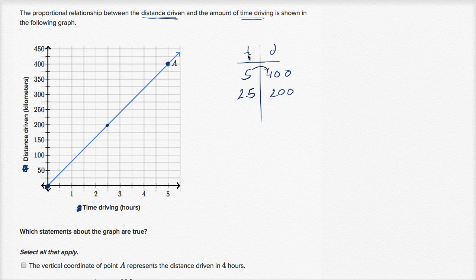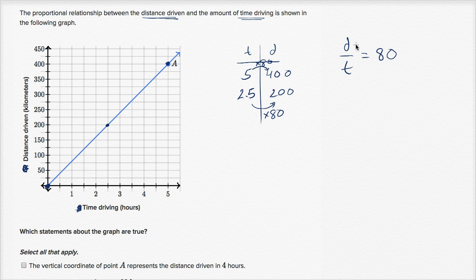Or if you want to go from time to distance, we're always multiplying by 80. We could say that distance divided by time gives us a proportionality constant of 80. If we include the units — distance is in kilometers, time is in hours — that's 80 kilometers per hour. This is the rate at which we are driving, our speed of 80 kilometers per hour, which is also the proportionality constant.